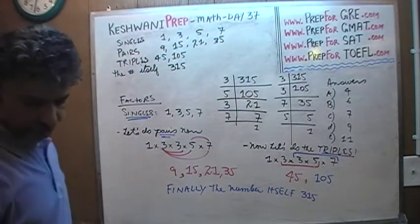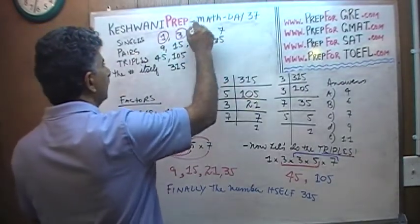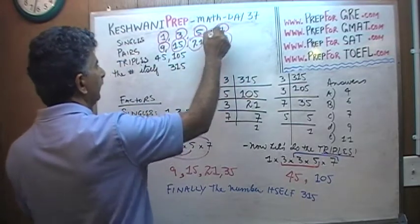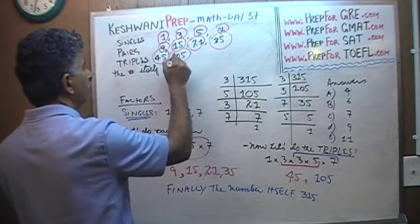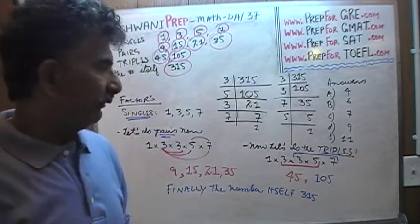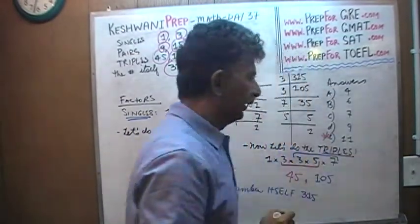So how many do we have? We have 1, 2, 3, 4, 5, 6, 7, 8, 9, 10 and 11. These are all factors of 315. There are 11 factors. The answer is E.